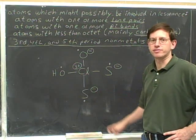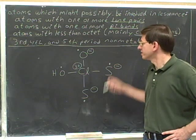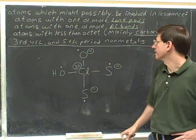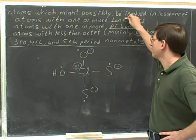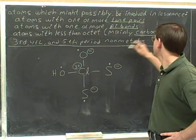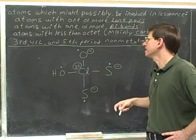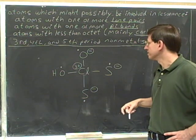Even without a formal charge, the sulfur would have two lone pairs, and with the formal charge, it has a third lone pair. Now what about this chlorine? I hope you can read that this is a Cl for chlorine. Well, the chlorine doesn't have any lone pairs, it doesn't have any pi bonds, and it's not a carbocation or anything else with less than an octet, but it is a third period non-metal.